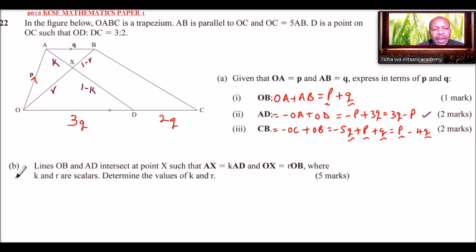Let's start with OB. We say OX equals, it is a fraction of OB as we are given here. But already we had expressed our OB here, and that is why I mentioned that if you mess up this part, you are likely to get zero in this question. So we replace OB in terms of P and Q. So this is R, we put the bracket P plus Q. These symbols we use to differentiate scalars and vectors. You can see here we have R is a scalar and P is a vector. We can open the bracket and say this is RP plus RQ.